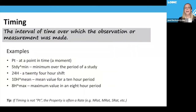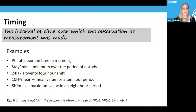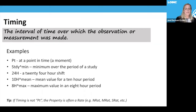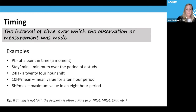Timing is the third axis — the interval of time over which the observation or measurement was made. PT (point in time, a moment) is the most common. Others include study minimum, study maximum, study mean, 24-hour, or 24-hour urine specimen. A tip: if timing is not PT, the property is often a rate — such as number rate, mass rate, or substance rate.